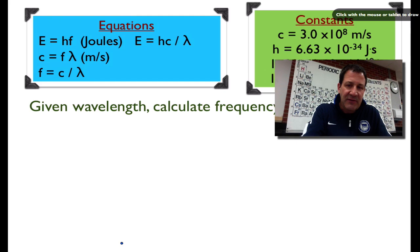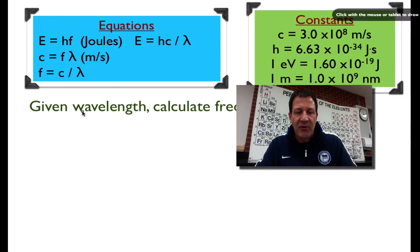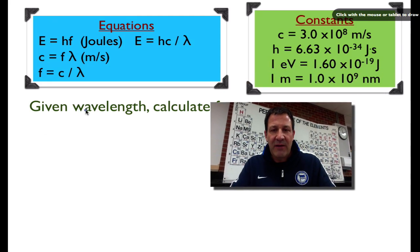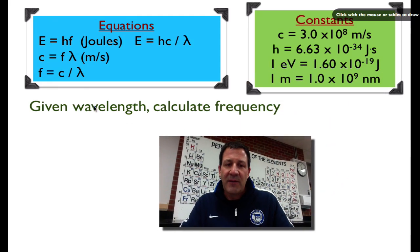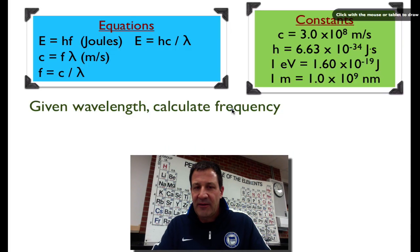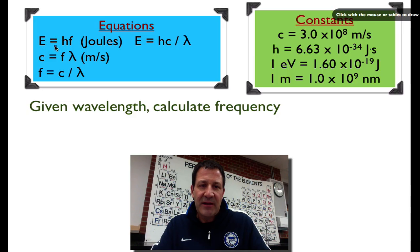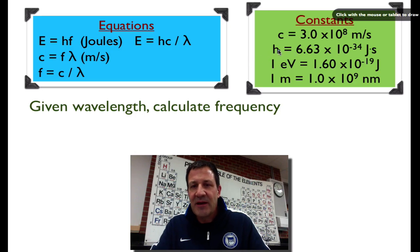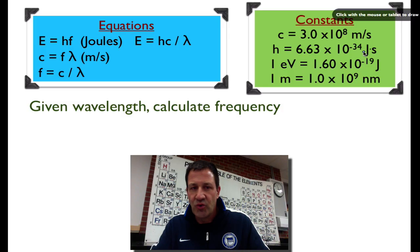I'm going to give you a wavelength, show you how to calculate the frequency, and then show you how to calculate the energy. These are the equations we're going to use. The energy in a photon of light is equal to HF — Planck's constant times the frequency. H is Planck's constant: 6.63 times 10 to the minus 34 joule seconds.